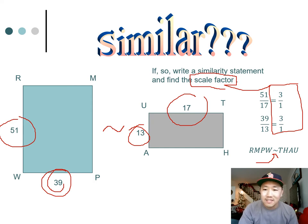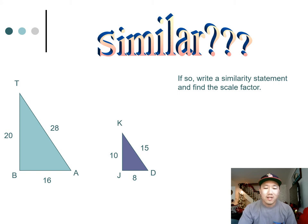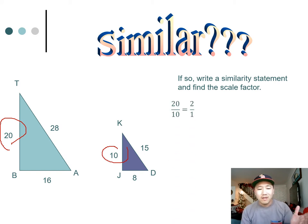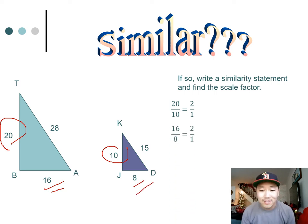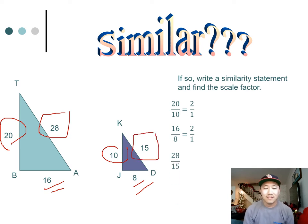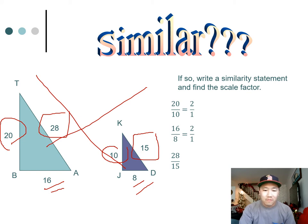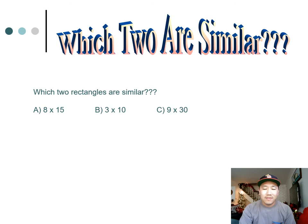Here's another example — are these two triangles similar? Compare the big side to the big side, small to small, medium to medium. 20 to 10 reduces to 2 to 1, and 16 to 8 also reduces to 2 to 1, so far so good. But then 28 to 15 doesn't even reduce to 2 to 1 — it doesn't match. Because the sides don't all share the same scale factor, these triangles are not similar.